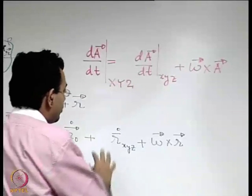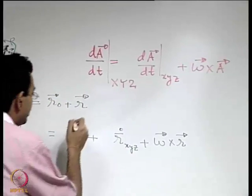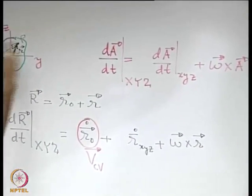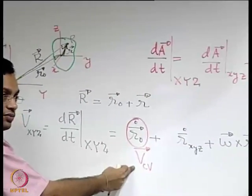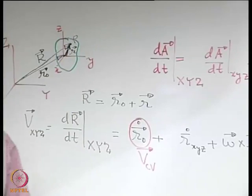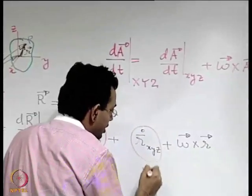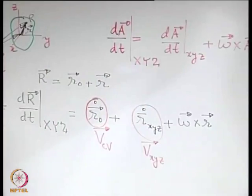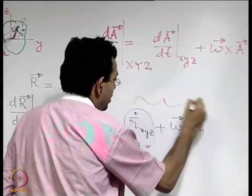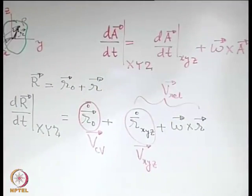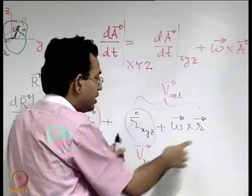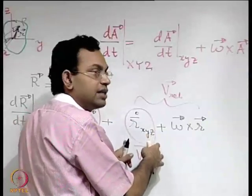Interpreting these terms: r0-dot is the translational velocity of the control volume, since it is the time rate of change of the position vector of the origin of the reference frame describing the control volume. The term r-dot(small XYZ) is the velocity as visualized from the reference frame small XYZ, and omega cross r is the rotational contribution. These two together can be thought of as the relative velocity. So the absolute velocity equals the velocity of the control volume plus velocity relative to the control volume, the relative velocity having one translational and one rotational component.